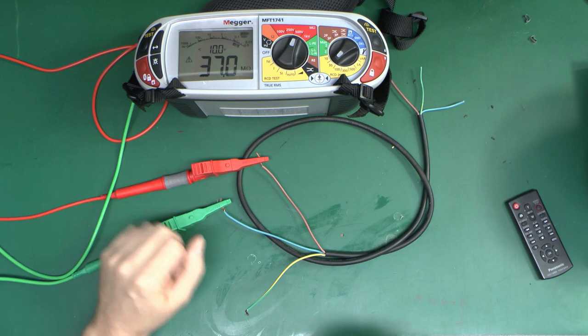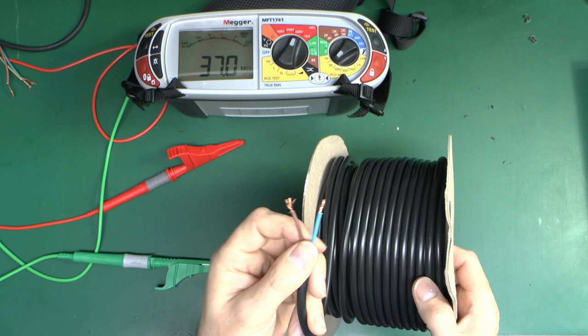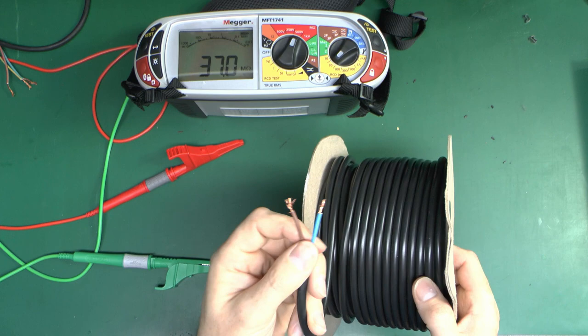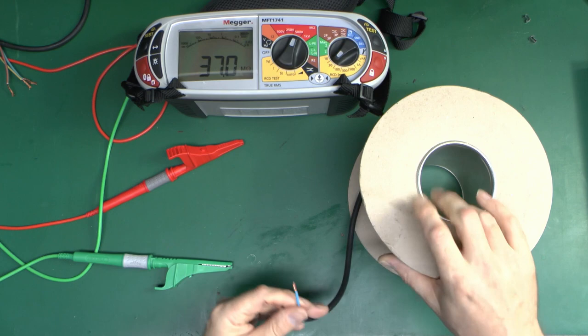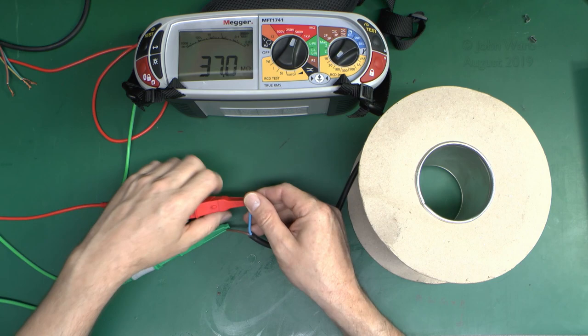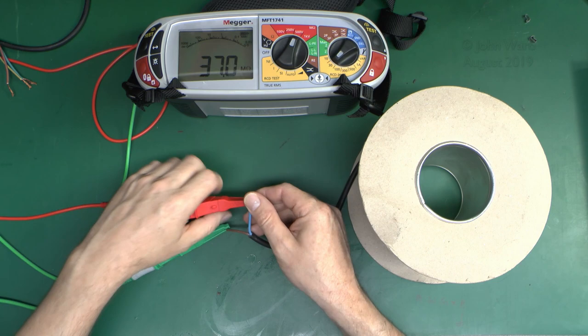Now I'll just show you what happens with some decent cable. This is a 2 core flex, so there's actually one millimeter squared, but there's probably about sort of 40 meters or so left on this 50 meter roll. So I'll just prepare the two ends here, and just connect it on. And so this is brand new and never used, so obviously you would expect it to be pretty decent. 500V again, so let's see what we get this time.